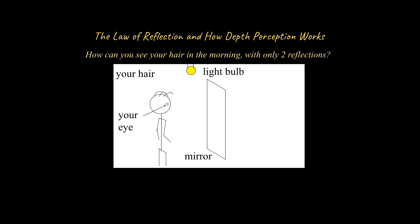It's also going to reflect off of the mirror as well. So if we start with a light ray coming from the light bulb and it reflects off the hair going into the mirror, we're still following the law of reflection here — angle A is equal to angle B, and that's really crucial. I've drawn a normal line here, and you can see that these two angles are equal to each other.